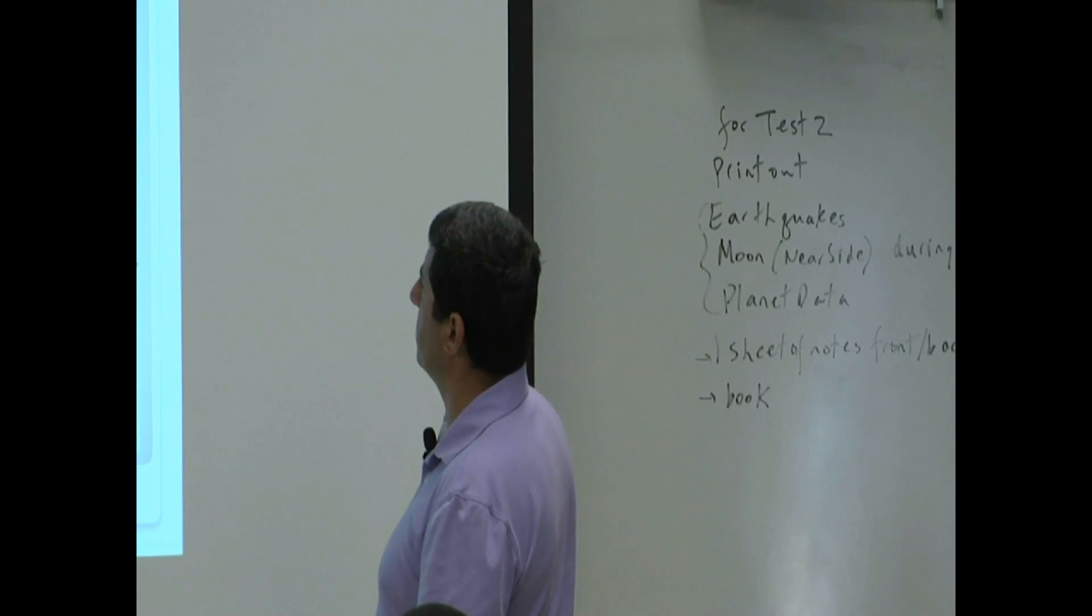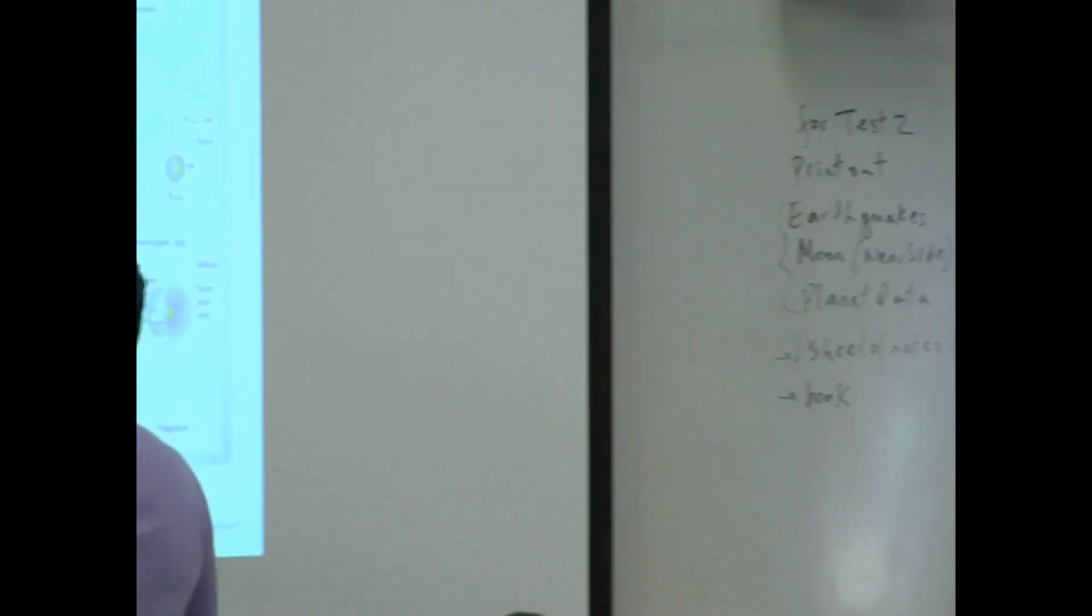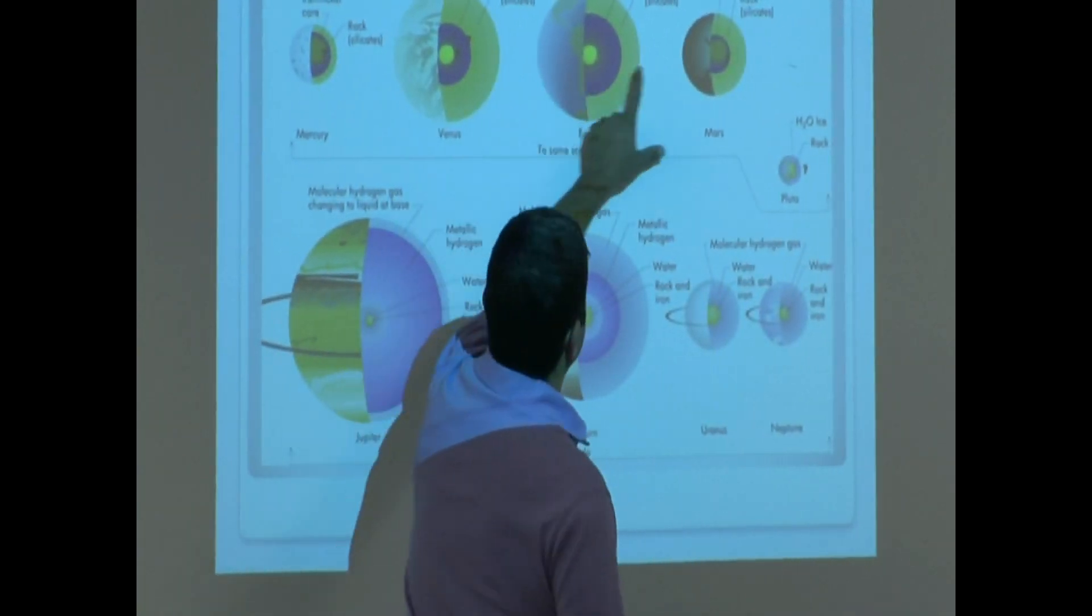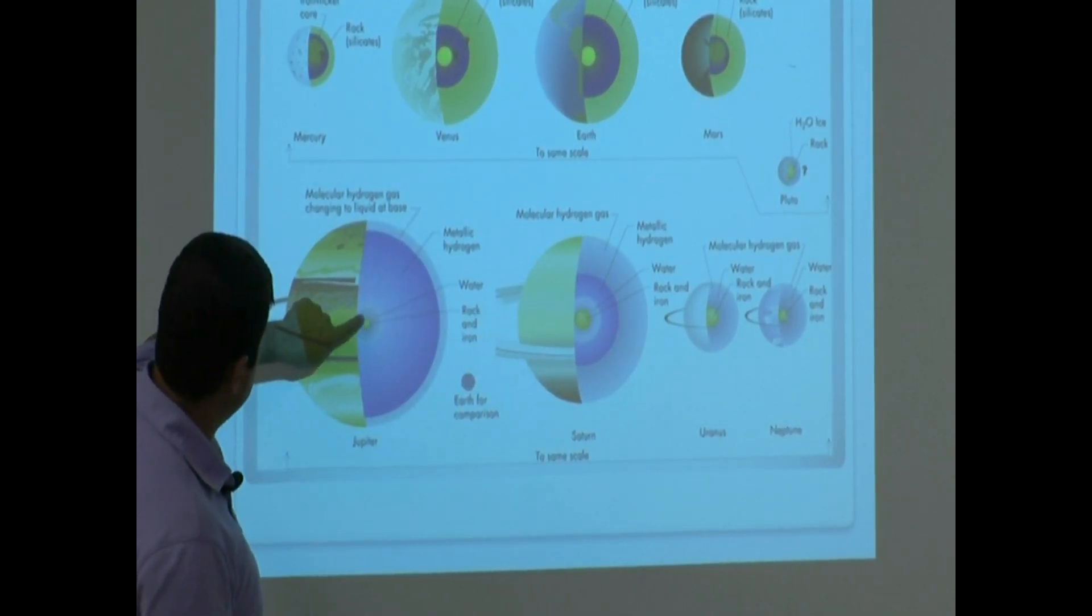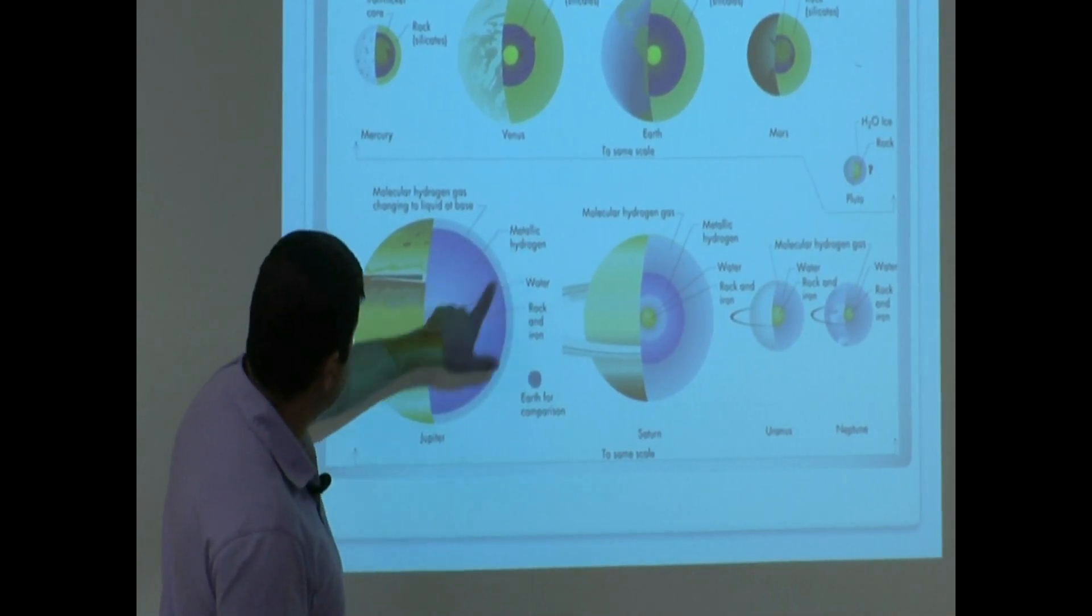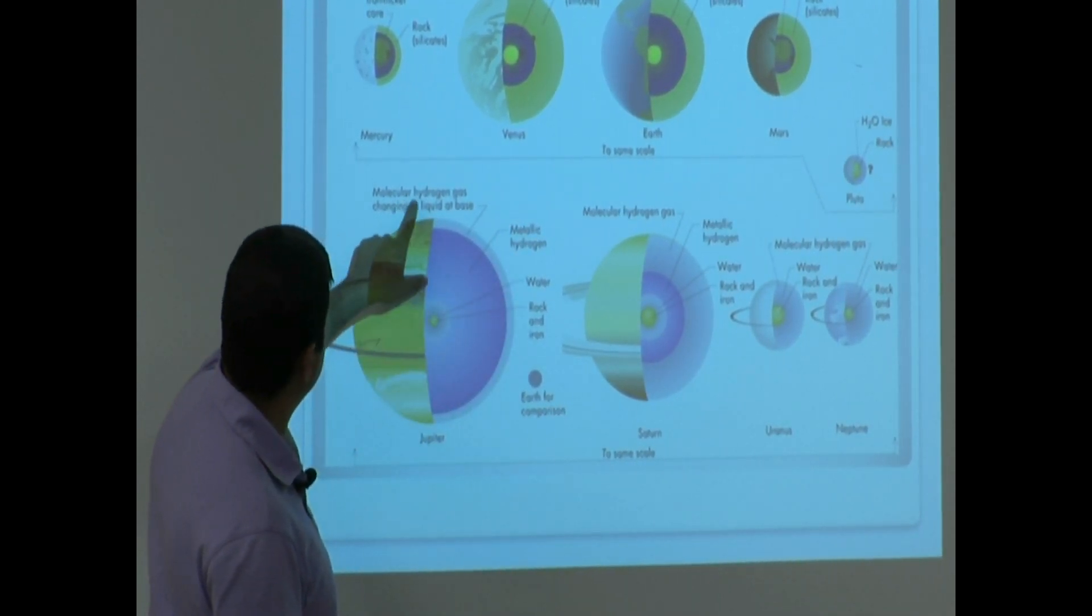This is kind of a comparison of the interior of the planets. Mercury, Venus, Earth, Mars. Jupiter, you see here, the core, water, metallic hydrogen, molecular hydrogen changing to liquid. You see here.